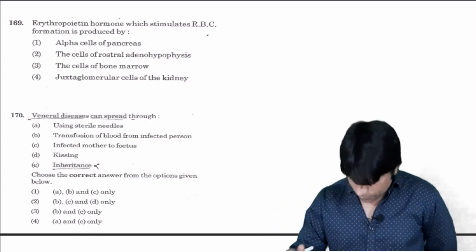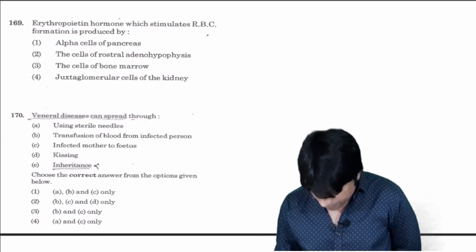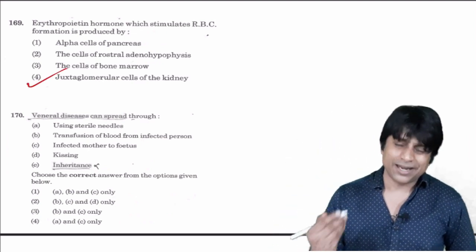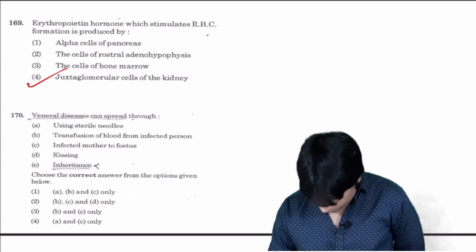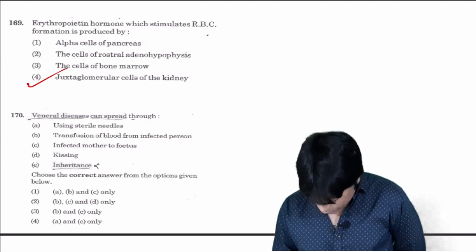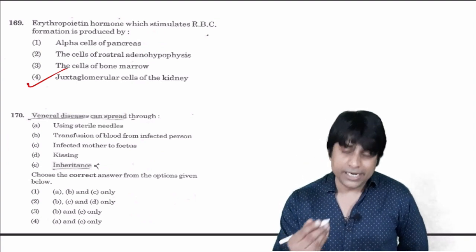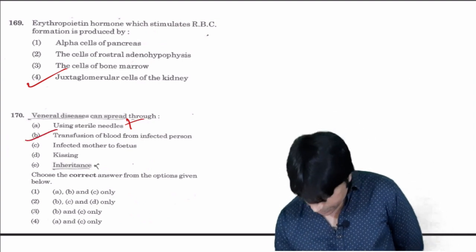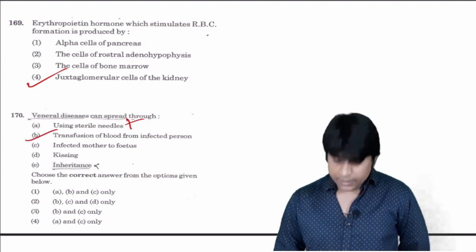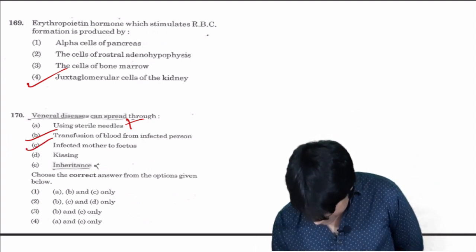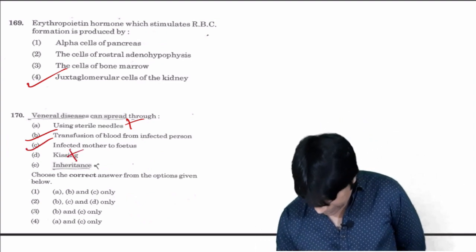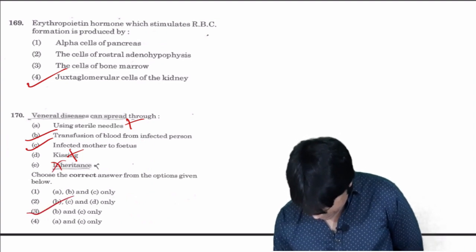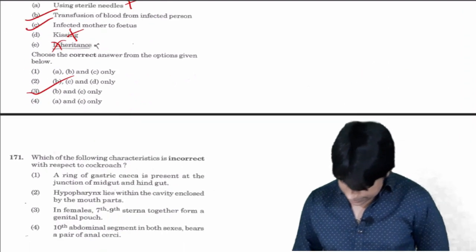Erythropoietin hormone which stimulates RBC formation is produced by juxtaglomerular cells of the kidneys. Straight away the answer is four. Venereal disease can spread through using sterile needles - no. Transfusion of blood from infected person - yes. Infected mother to fetus - yes. Through kissing, through inheritance - cannot be. So B and C are the correct answer, option is three.